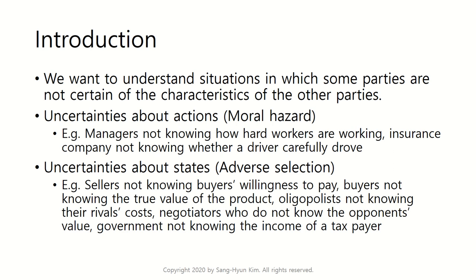Adverse selection is an asymmetric information problem about states. Here, states means types or characteristics of other people. We call it 'state' for the following reason: imagine there are many universes — multiverses — and we don't know which universe we are in. In different universes, people are different. For example, in one universe I like red, in another I like blue. I know which color I like, but you don't. That's why we call it uncertainty about states.